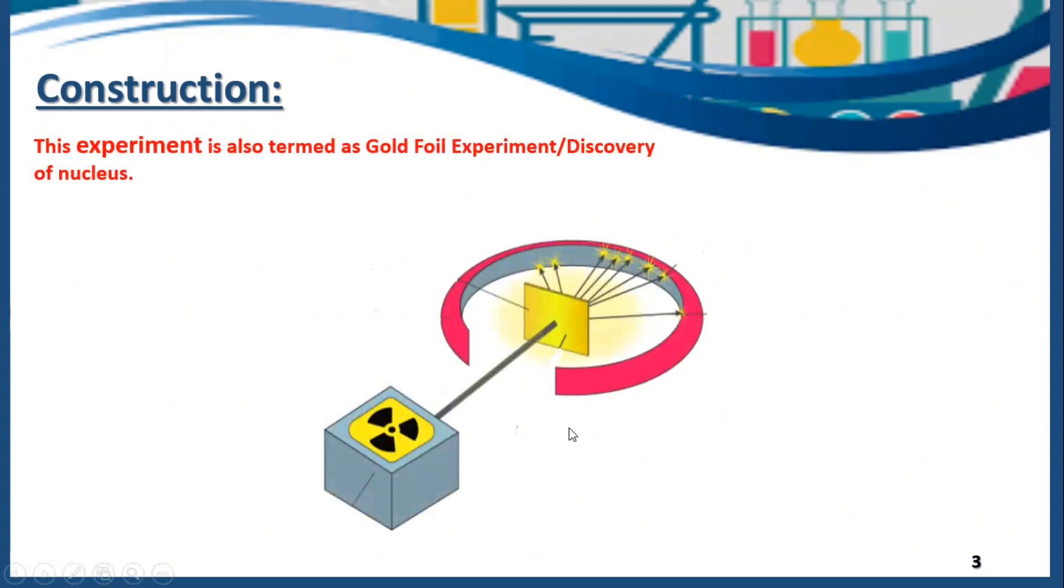Rutherford model is called the gold foil experiment or the discovery of the nucleus. You can see this is the equipment or the tools that were used by Rutherford.